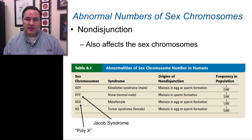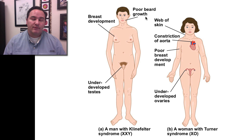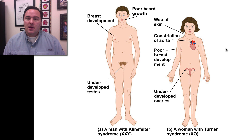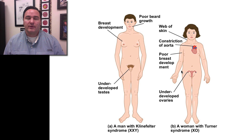Let's just look at the details of a couple of these. In Klinefelter syndrome, a man may eventually have poor beard growth, may develop breasts, and have underdeveloped testes. Whereas a woman with Turner syndrome — the XO condition — they have this interesting web of skin, some heart morphology that is different, poor breast development, and underdeveloped ovaries.